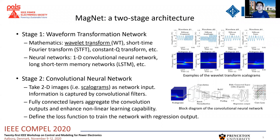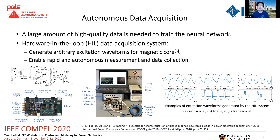The figure on the right-hand side shows the block diagram of this neural network. In order to train the neural network, a large amount of high-quality data is needed. Therefore, we designed a hardware-in-the-loop data acquisition system, which can generate arbitrary excitation waveforms and rapidly and autonomously measure and collect the data. The following figure shows the schematic and photos of the system, as well as several examples of the excitation waveforms.